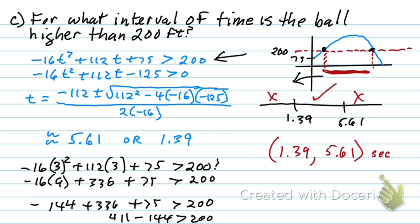Then we go back and say, are those numbers reasonable? Well if it takes three and a half seconds to get all the way up here, is it reasonable that to get to 200 feet it takes 1.39 seconds? Yeah. If it takes three and a half seconds to get to the very top, is it reasonable that it's still bigger than 200 when it gets to 5.61 seconds? Yeah, that's reasonable.